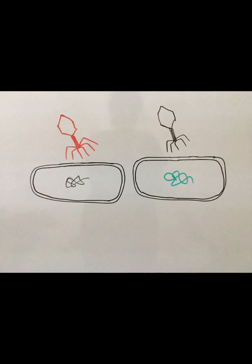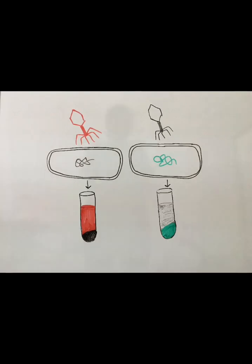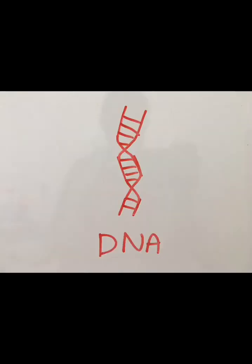After centrifugation, the bacterial cells form a pellet, whereas the rest form the supernatant. Radioactivity was found in the supernatant where the sulfur was labeled, whereas radioactive pellet was found where the phosphorus was labeled. Thus, this experiment proved that the genetic material was DNA and not proteins.